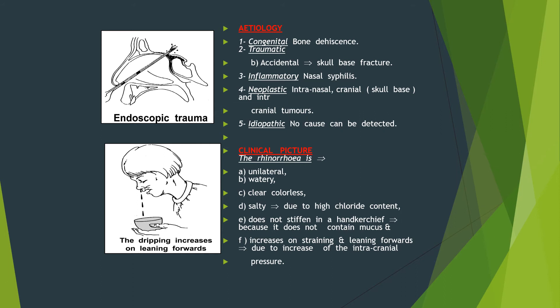Clinical picture: the rhinorrhea or nasal discharge is usually unilateral, watery, colorless, and salty due to the high chloride content in the cerebrospinal fluid. It does not stiffen in a handkerchief because it does not contain mucus — this is an important difference from nasal discharge of sinus origin. Cerebrospinal fluid leakage increases on straining and leaning forward due to increased intracranial pressure.